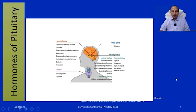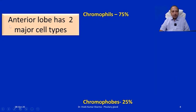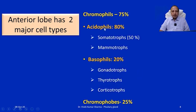The cells of the anterior pituitary can be divided on the basis of staining into two major groups: chromophils, which are nearly 75%, and chromophobes, which are roughly 25%. Chromophils are further subdivided into acidophils, nearly 80%, and basophils, nearly 20%. The acidophils are the somatotrophs (about 50%) and mammotrophs. The basophils are the gonadotrophs, thyrotrophs, and corticotrophs.